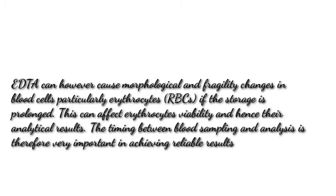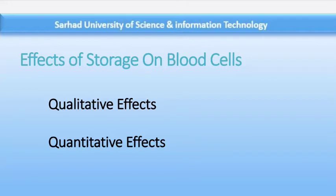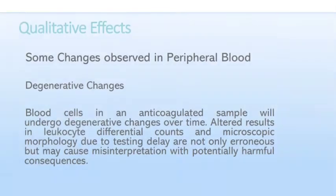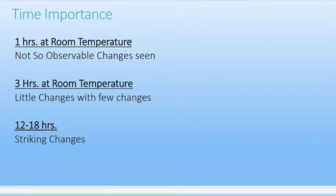If a blood film is allowed to stand in the laboratory before peripheral smears are made, some degenerative changes occur. These changes are not due to the presence of an anticoagulant, as they also occur in defibrinated blood. Films made from blood standing for no more than one hour at room temperature are not easily distinguished from films made immediately after blood collection. By three hours, changes may be observed, and after 12 to 18 hours they become striking.